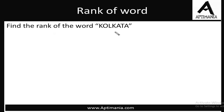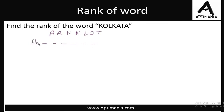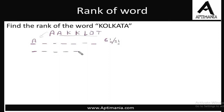Now suppose we need to find the rank of the word Kolkata. First we arrange the letters in alphabetical order: A, A, K, K, L, O, and T — seven letters. So we need to make 7-letter words. We start with A — A was not required at first position. The leftover letters are 6 and we have 6 positions, so we can make 6 factorial words. But since K is repeating in the remaining letters, we divide this by 2 factorial.